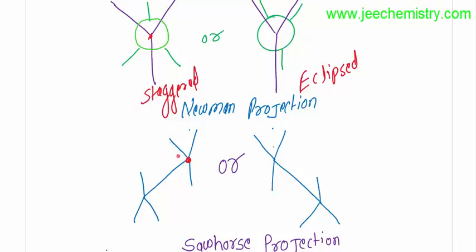For the front carbon: two bonds are in the upward direction and the side is already shown. One is in the downward direction, and another one is also in the downward direction. The back carbon has one upward direction, one upward direction, and two downward directions. Here, two are in the downward directions.